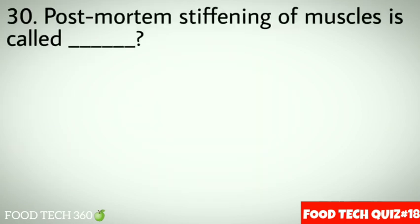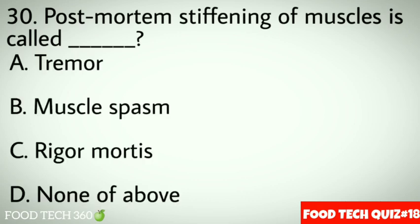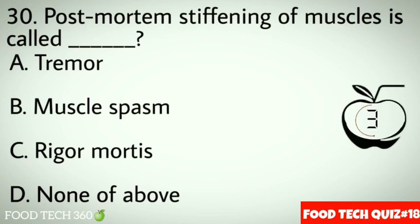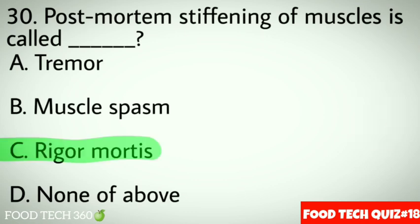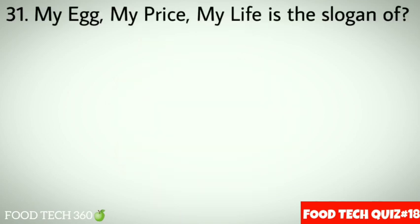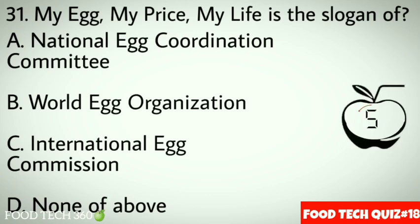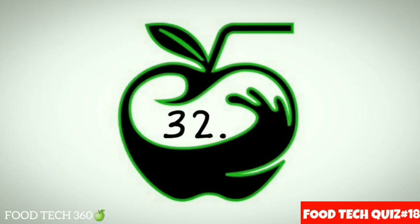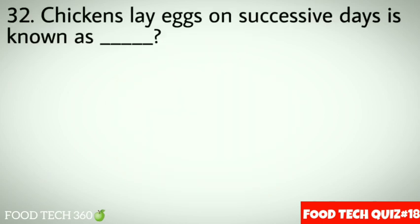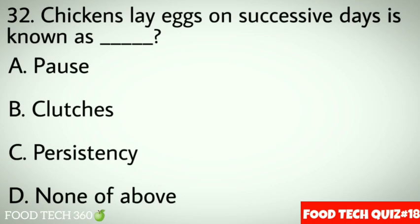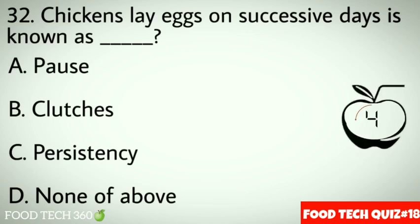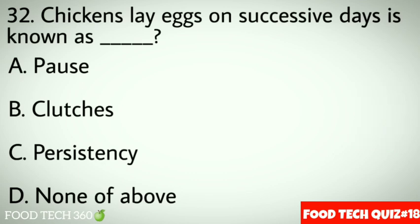Question 31: 'My egg, my price, my life' is a slogan of. Options: A. National Egg Coordination Committee, B. World Egg Organization, C. International Egg Commission, D. None of above. Correct answer: A. National Egg Coordination Committee. Question 32: Chickens laying eggs on successive days is known as. Options: A. Phosph, B. Clutches, C. Persistency, D. None of above. Correct answer: B. Clutches. Question 33: The main phospholipid in egg yolk. Options: A. Livetin, B. Phosvitin, C. Lecithin, D. None of above. Correct answer: C. Lecithin.